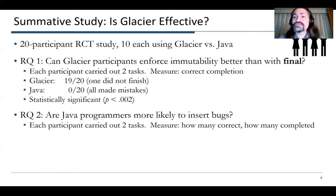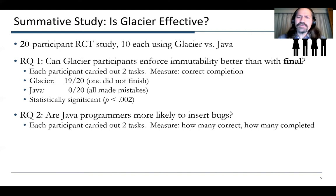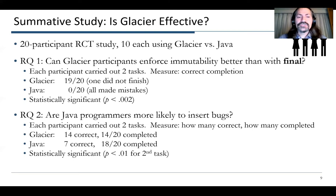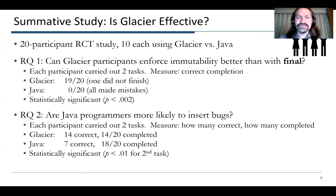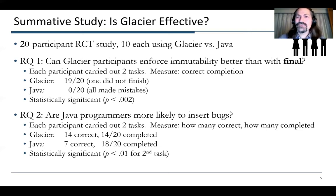In Glacier, we had 14 correct solutions — that was all the people who completed — so six people didn't actually complete these tasks. But in Java, 18 people completed them, but only seven of those were correct. So we had double the correct tasks in Glacier versus Java, and that's another statistically significant result, at least in the second task we performed.